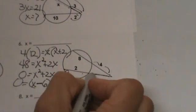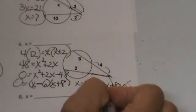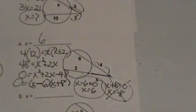Go back and plug in. This length is x. Can x be negative 8? No. x can only be a positive number. The only solution for this one is 6. We have to do a little factoring.